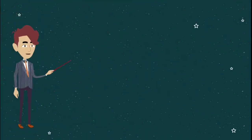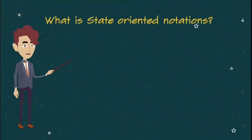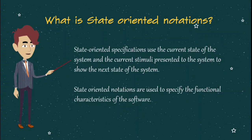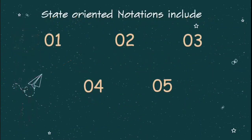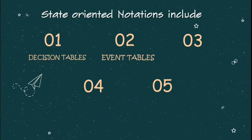First, let's see what state-oriented notation means. The state of a system is the information required to summarize the status of the system entities. That is, using the current state and the current stimuli, the next state can be determined. Let's see some examples of state-oriented notations: decision tables, event tables, transition tables, finite state mechanism, and Petri nets.